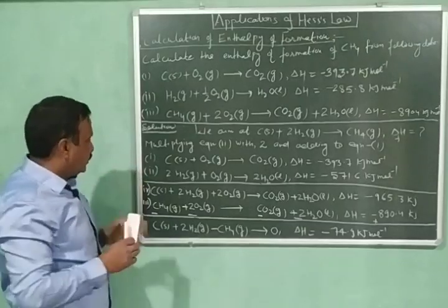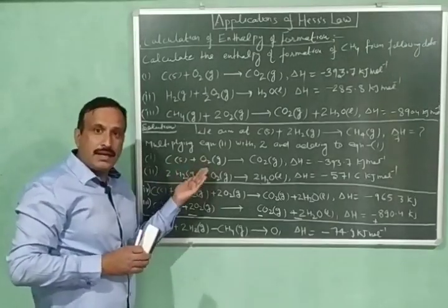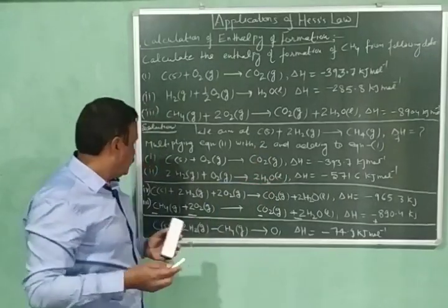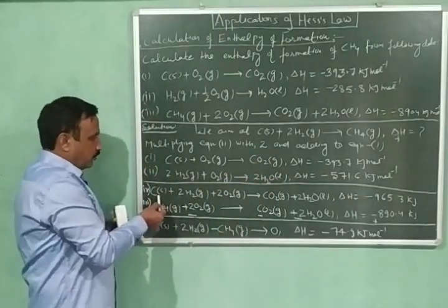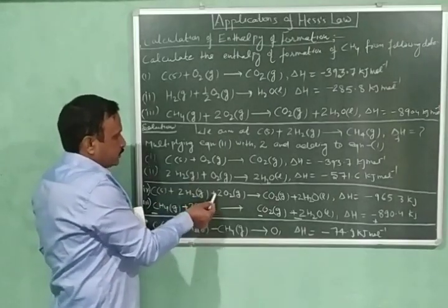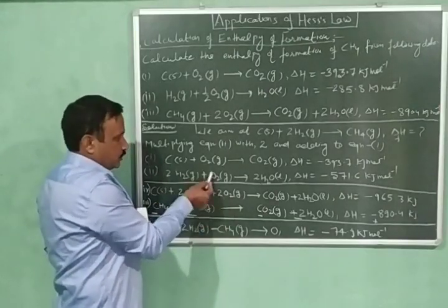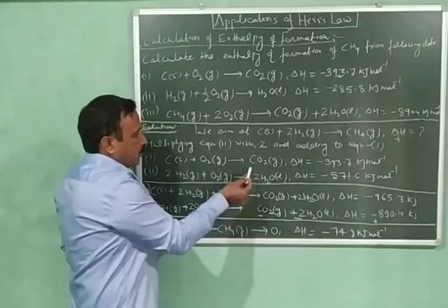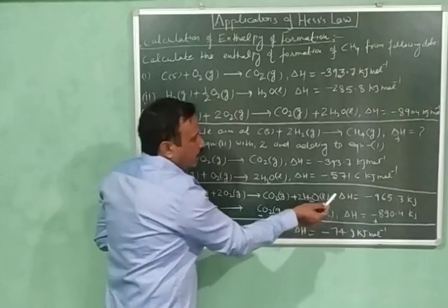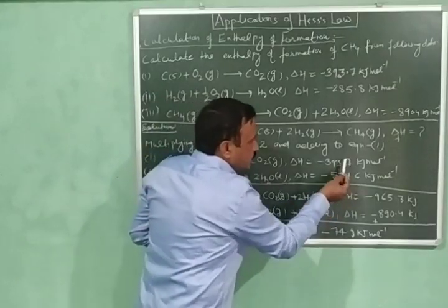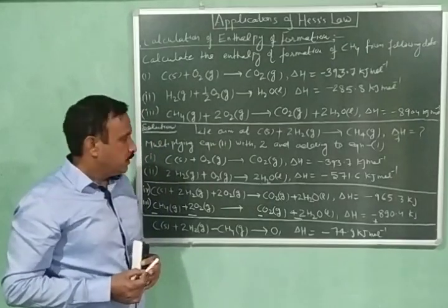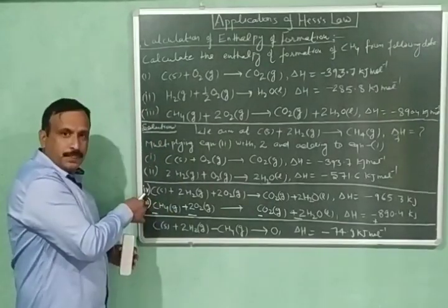After adding equation number one and equation two, the left-hand side is added to the left-hand side and the right-hand side to the right-hand side. After addition, we have one mole of carbon plus two moles of hydrogen plus two moles of oxygen on the left, giving one mole of CO₂ and two moles of water on the right. The enthalpy changes of both reactions are also added. Let this be equation number four.